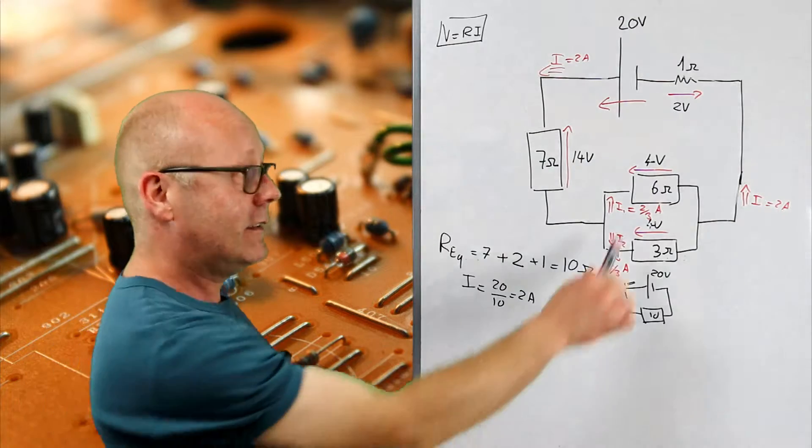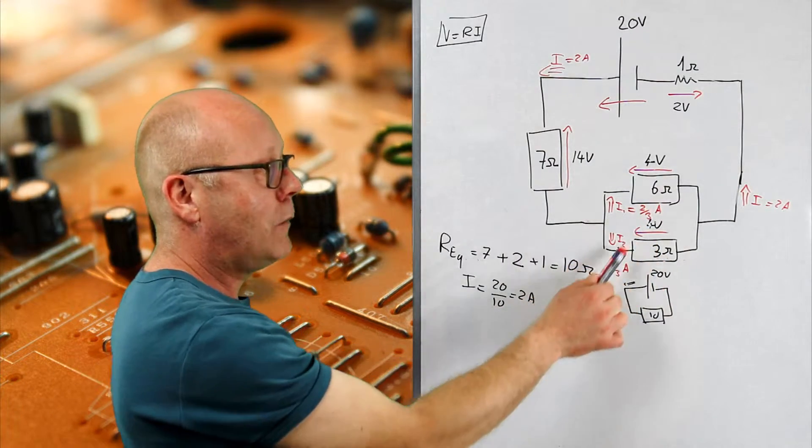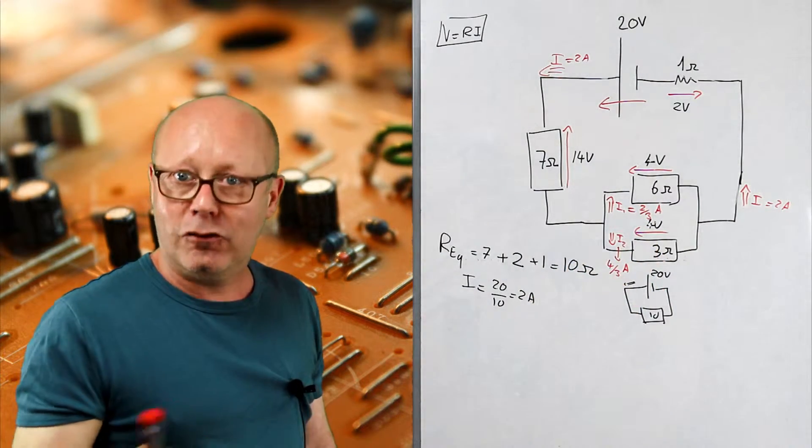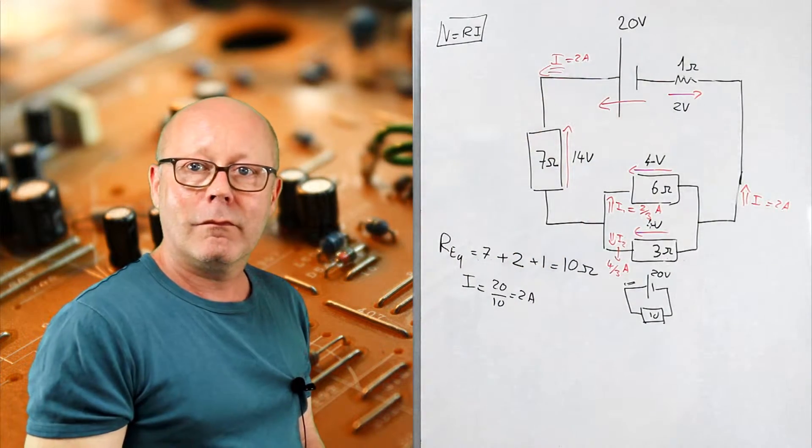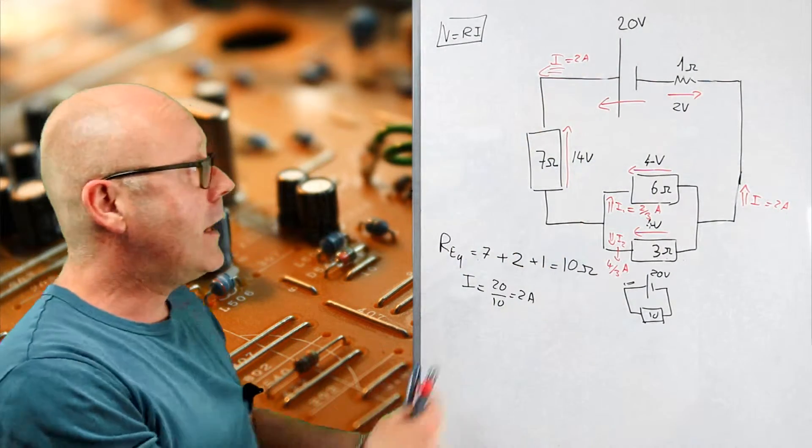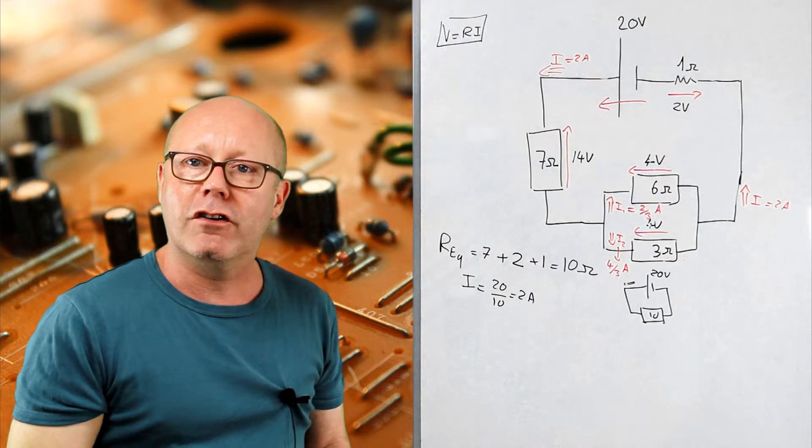If I want to check if I'm correct, I just add them together. 2 thirds plus 4 thirds equals 6 thirds which is 2, and I do find the 2 amps here. So that's it, I've calculated all my potential drops and my currents.